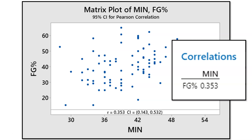We can tell by looking visually at the scatterplot, and also by looking at the correlation coefficient, that it's a positive relationship but it's somewhat weak — 0.353.